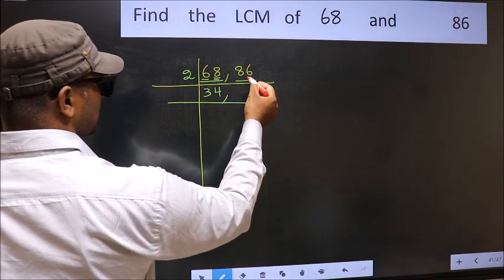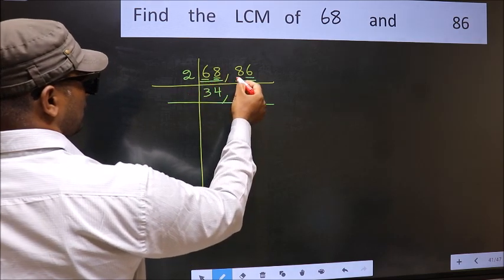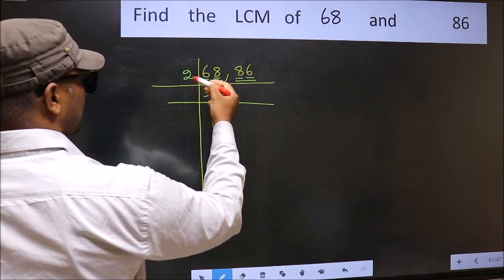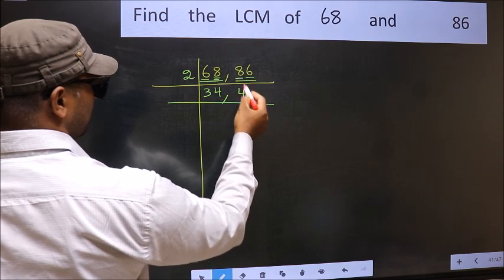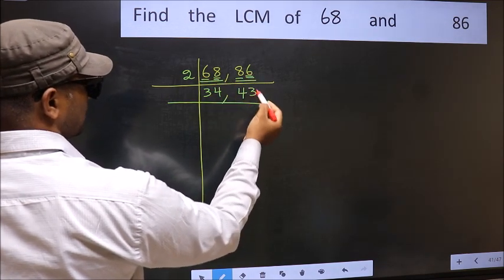Now the other number 86. Last digit 6 is even, so this is divisible by 2. First number 8, when do we get 8 in the table of 2? 4 times 2 is 8. The other number 6, when do we get 6 in the table of 2? 3 times 2 is 6.